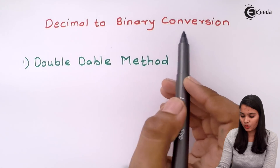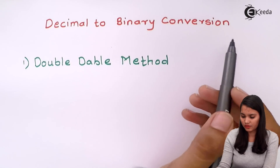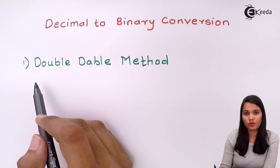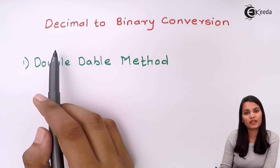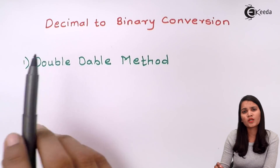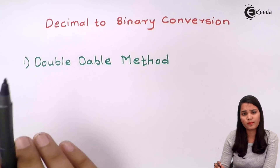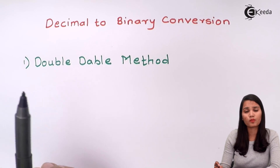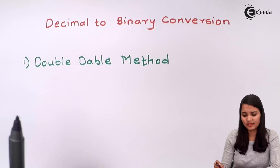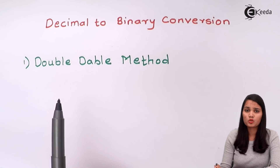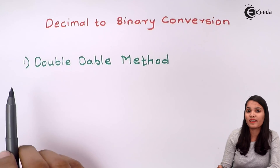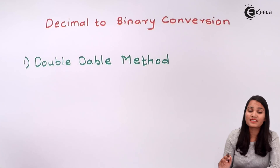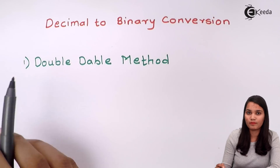Now let's see decimal to binary conversion. There are various methods to convert a decimal number into the binary number, but the most easiest method is the double-double method. So what do you mean by double-double method? Now let's see the double-double method.